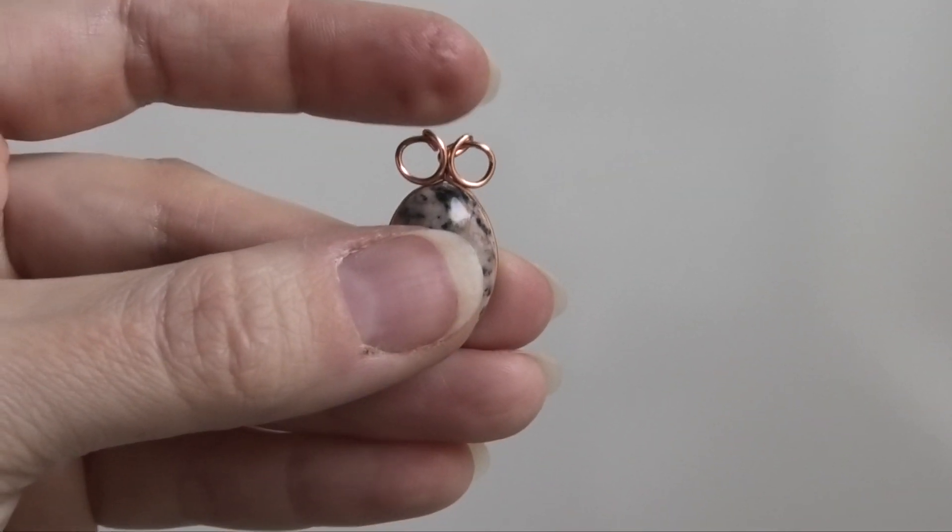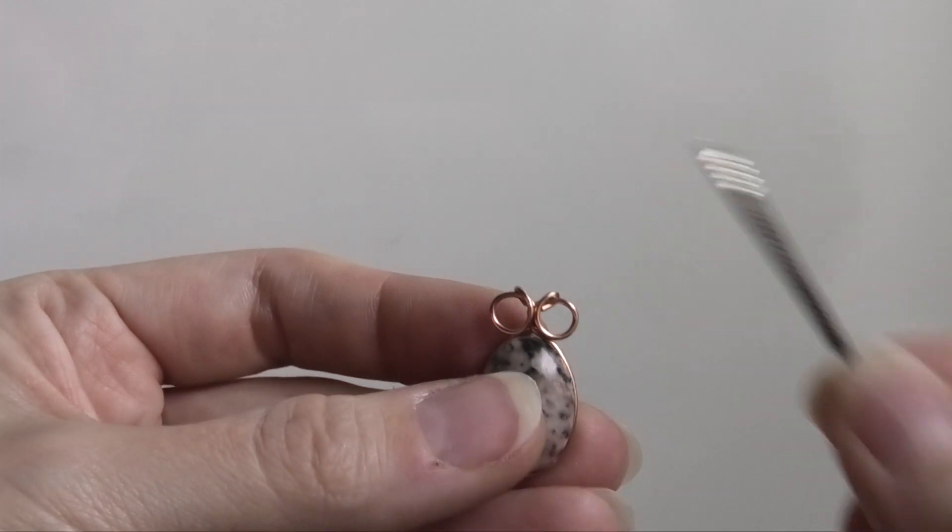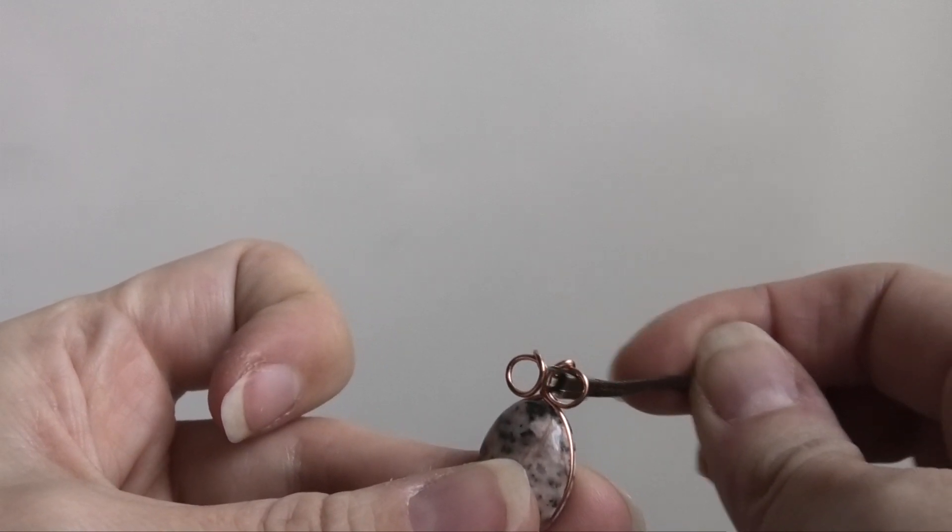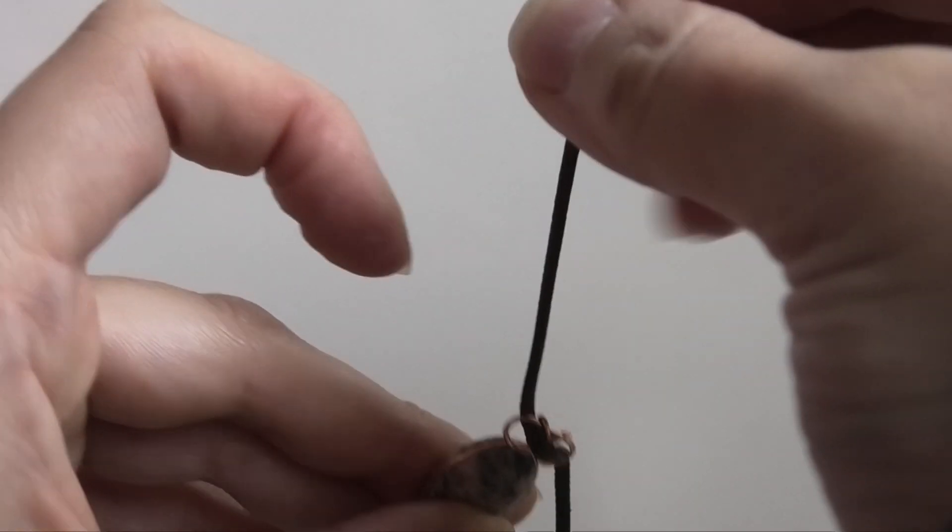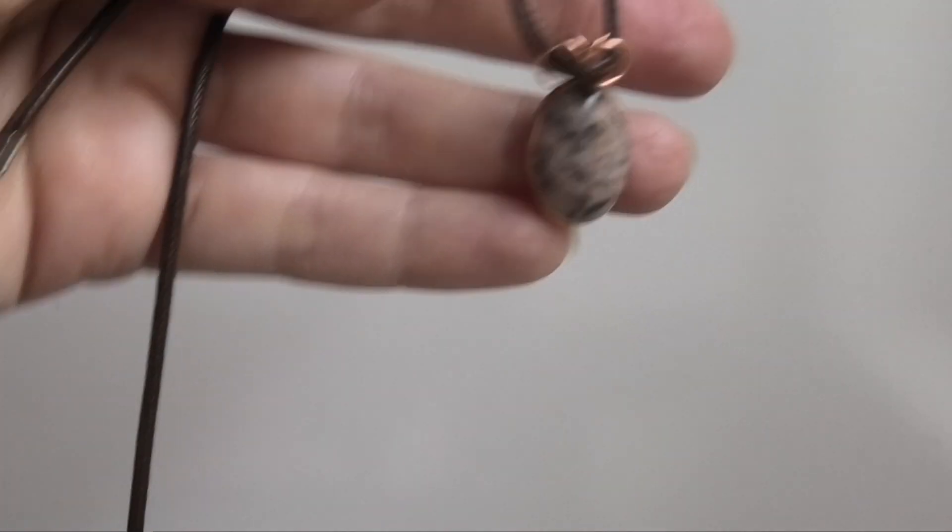And the way that you wear this is there's two different ways. So you take your cord necklace, my clasp actually broke off, so ignore that. But you can either put it in like this and then out the other end and it'll look like this